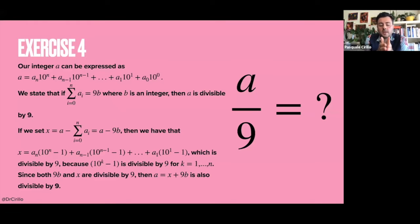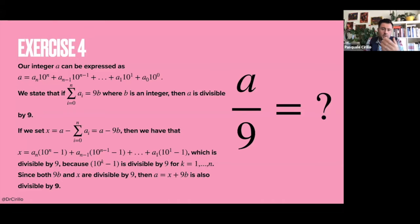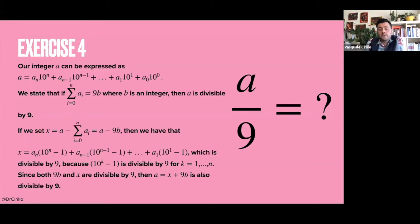Now, our integer can be expressed as follows. Imagine our integer has n digits — it's a generic n. I can write my integer as: a coefficient aₙ that multiplies 10 to the power n, plus a coefficient aₙ₋₁ multiplied by 10 to the power n minus 1, and so on, until I reach a₁ times 10 and a₀ times 10 to the power 0, which is 1. For example, if I take the number 123, I can write this as 1 multiplying 100, plus 2 multiplying 10, plus 3 multiplying 1, so 100 plus 20 plus 3.